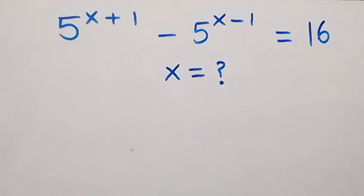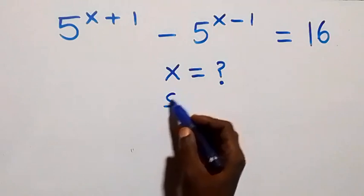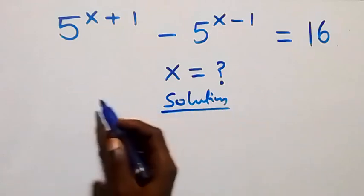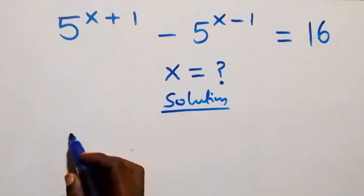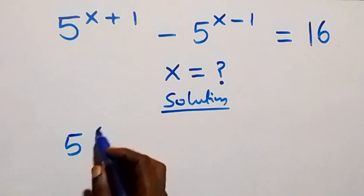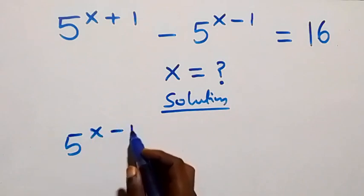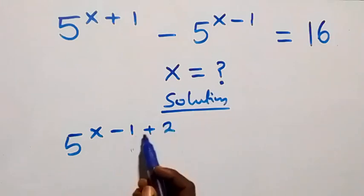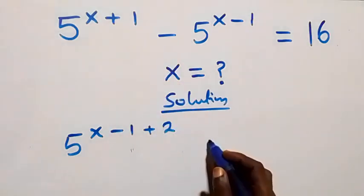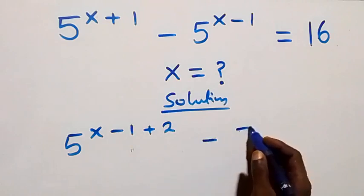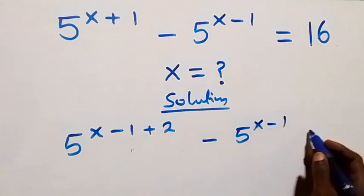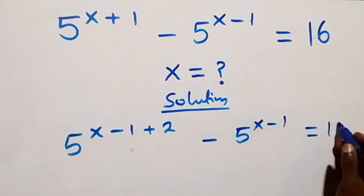Hello, you're welcome. How to solve this nice exponential equation. From what we have, we can rewrite this as 5 raised to power x minus 1 plus 2, which is the same as x plus 1, then minus 5 raised to power x minus 1, equals 16.